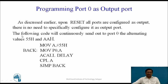This code continuously sends alternating values of 55h and AAh to Port 0. First, 55h is loaded into the accumulator and moved to P0. After some delay, the accumulator is complemented — complementing 55h gives AAh — which is then sent to P0. This runs in a loop, so 55h and AAh are sent alternately with a delay to Port 0 continuously.